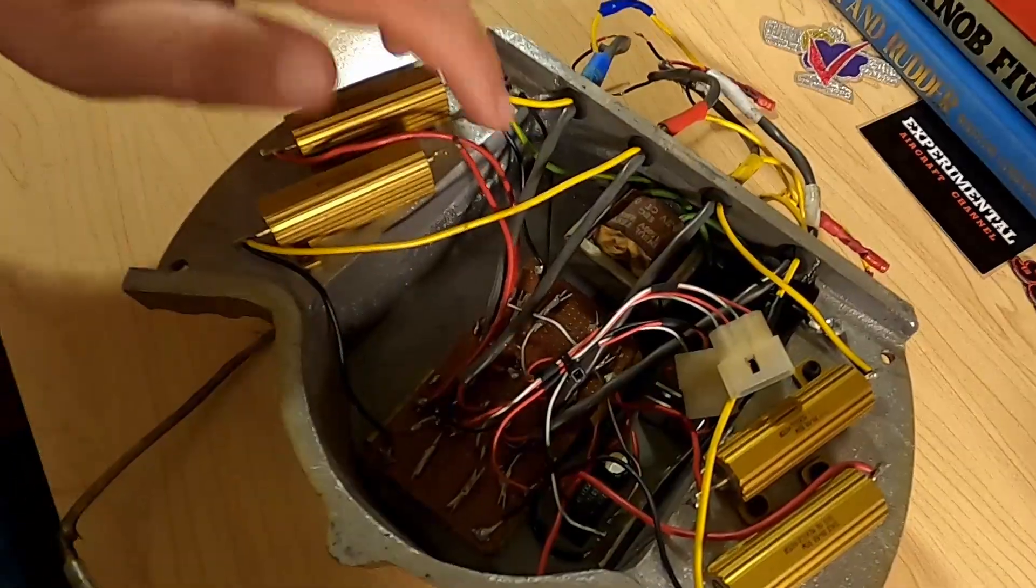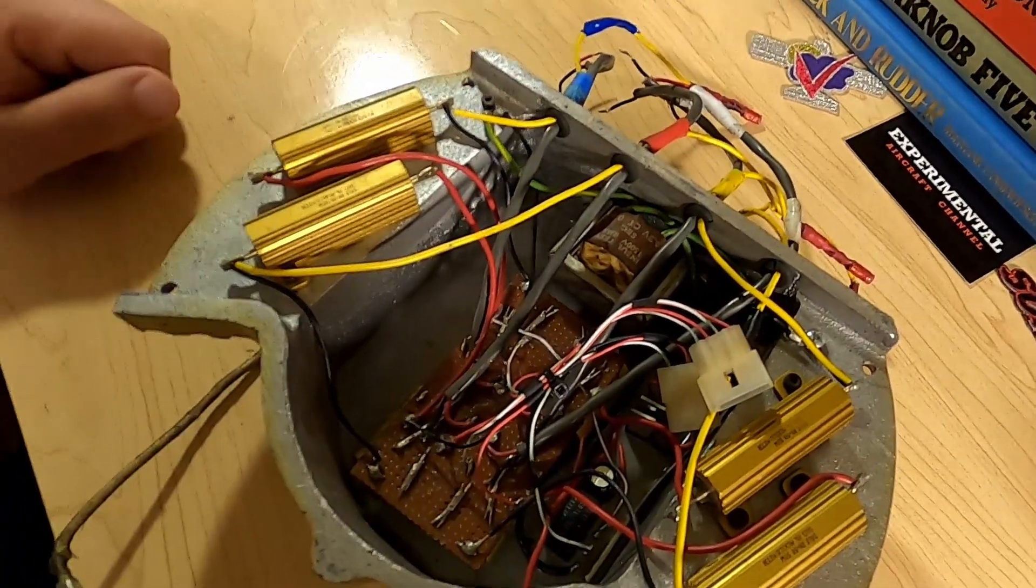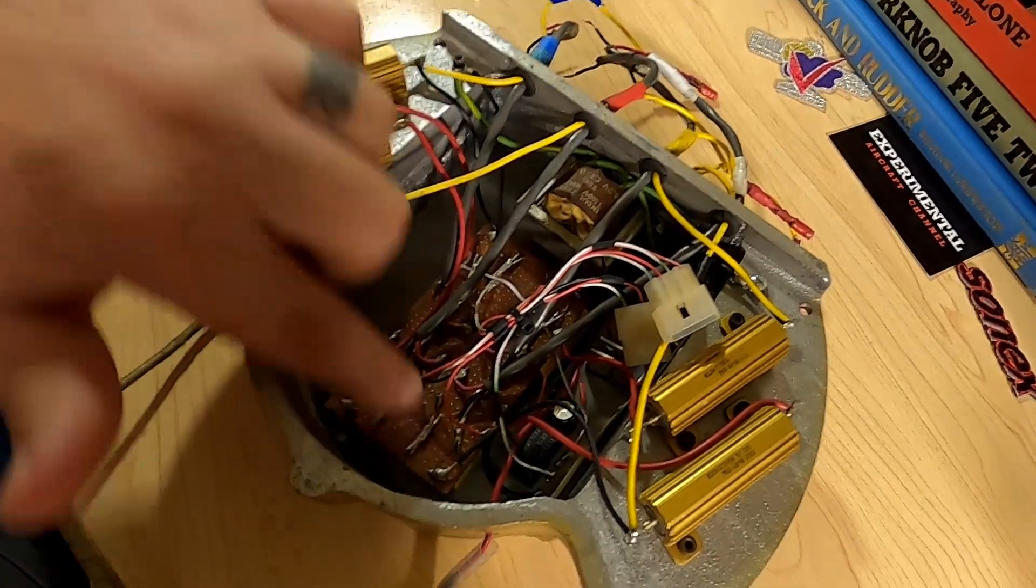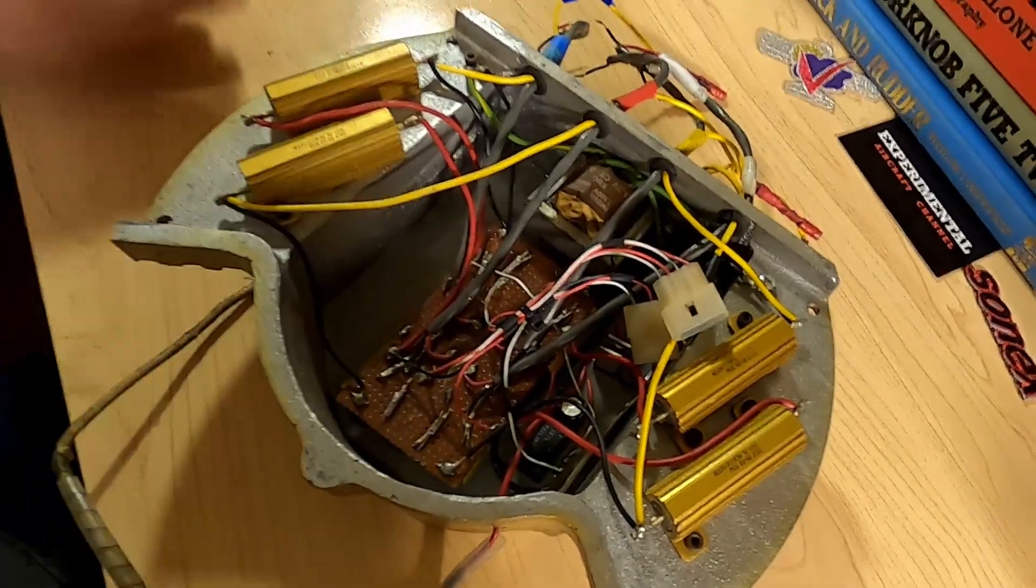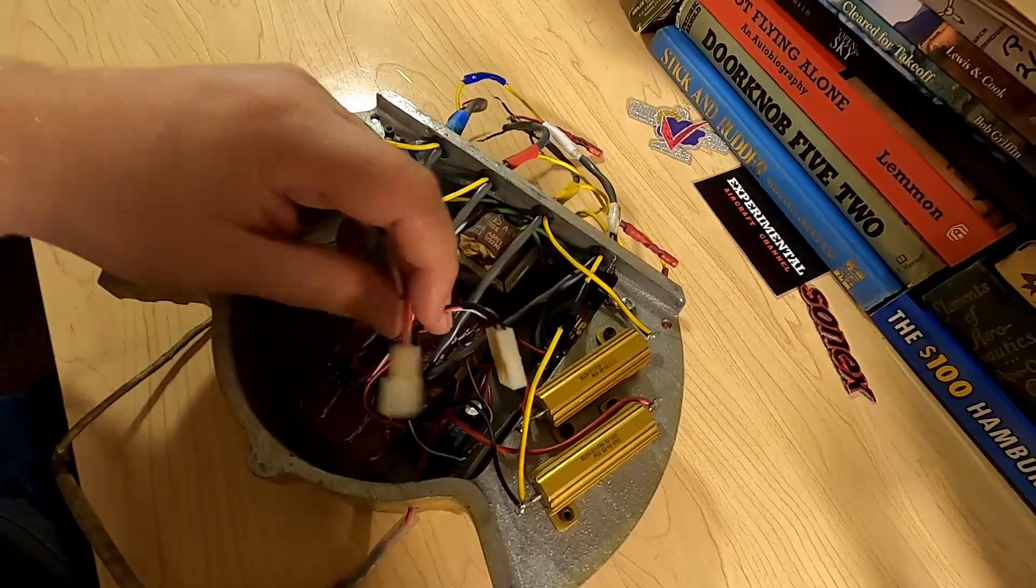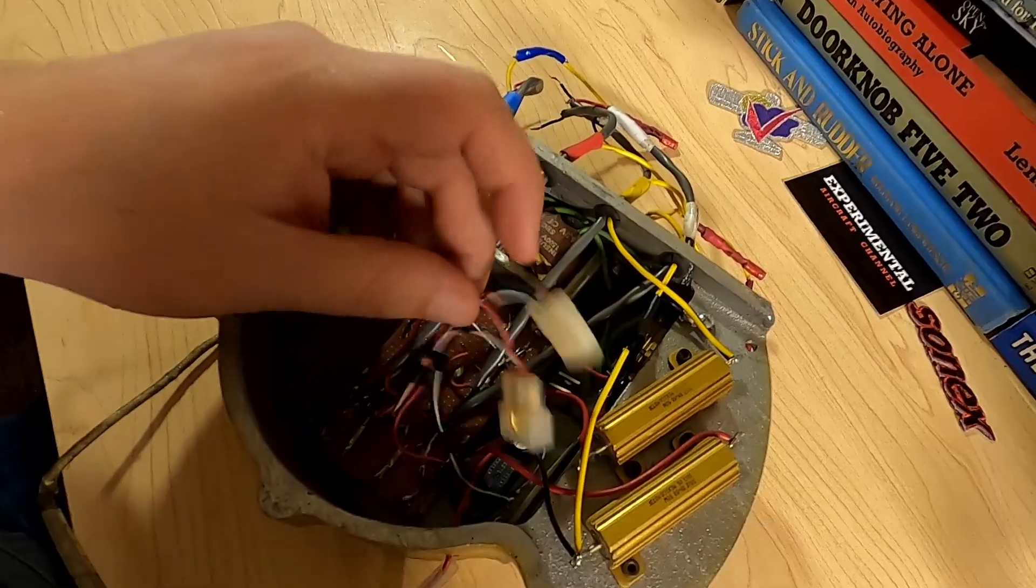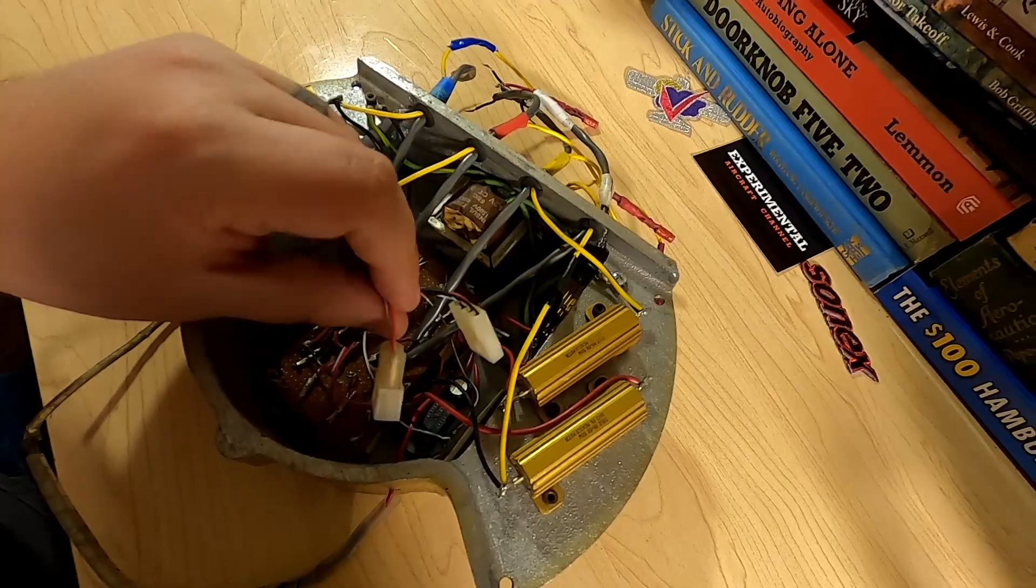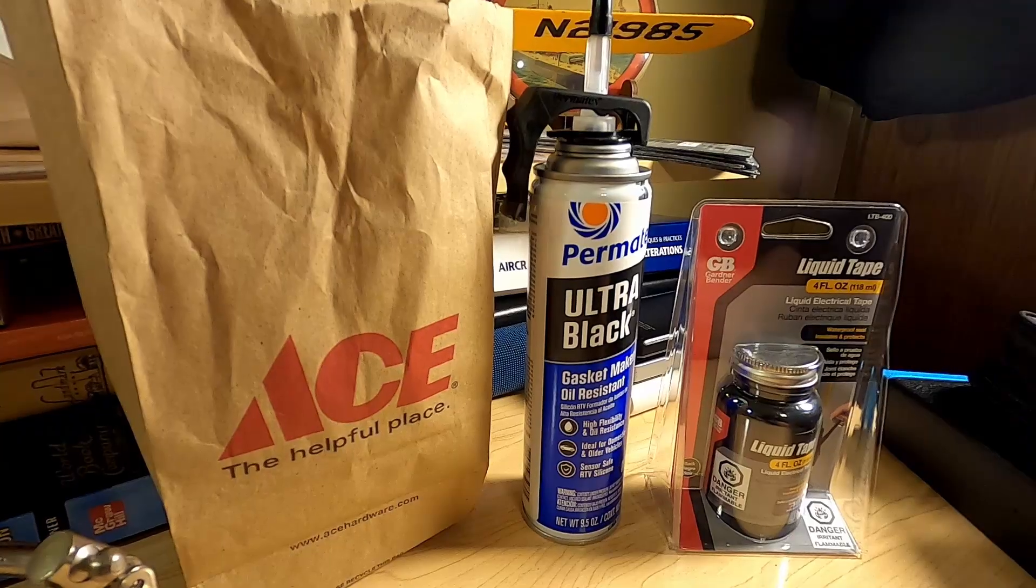And to do that we need to re-solder this loose resistor connection, clean up and re-solder this board connection. We'll use some silicone to temporarily pot this board and all these connections to help protect them. Add strain reliefs to the outside of the box. And then I think we're going to try out some liquid electrical tape to pot these connectors as well. Hopefully keep those terminals from backing out.